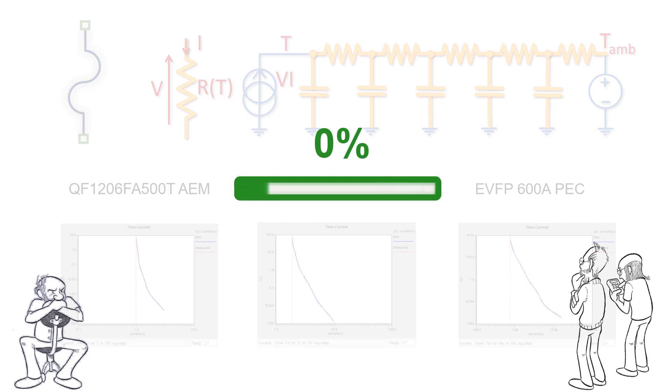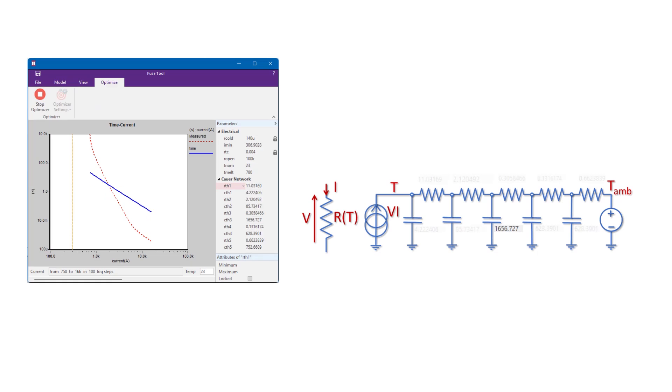Instead of long brute force transient simulations, the Sabre RD fuse tool calculates analytically the blow time versus current curves in milliseconds, allowing the fuse parameters to be automatically optimized in seconds, not hours.